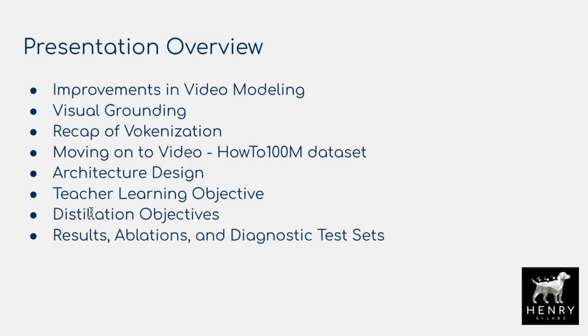Then we'll look at these really interesting knowledge distillation objectives. Aside from the standard soft labeling and L2 regression on hidden states, they also use a technique called neuron selectivity transfer and contrastive representation distillation — interesting ideas building on knowledge distillation. We'll look at the results, ablations, and diagnostic test sets, particularly showing how this kind of visual grounding improves language task performance.